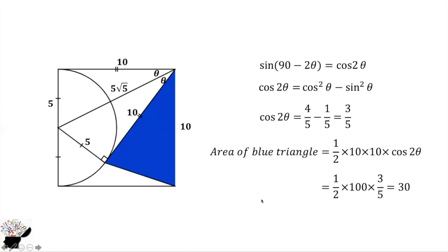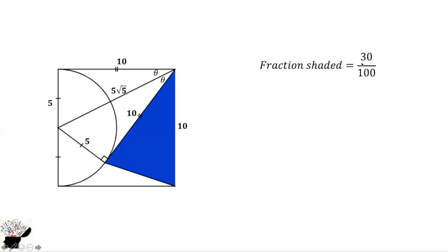The fraction shaded is the area of the triangle divided by the area of the square. The area of the square is 10 times 10 equals 100. So the fraction shaded is 30 divided by 100, which gives 3/10. That is the answer. Thank you for watching — please subscribe for more educational videos.